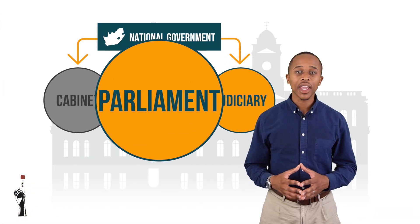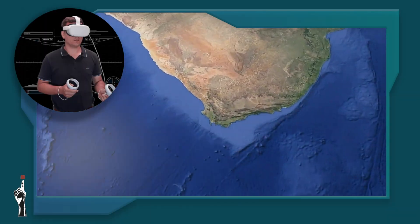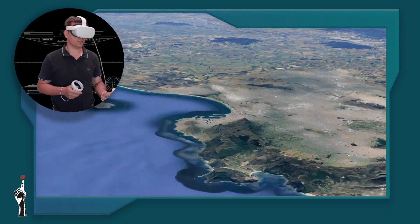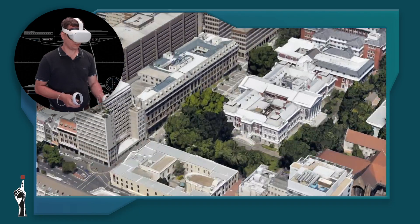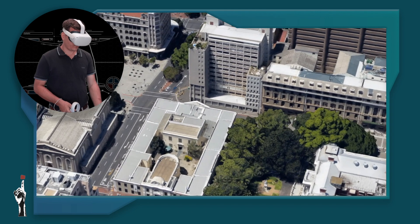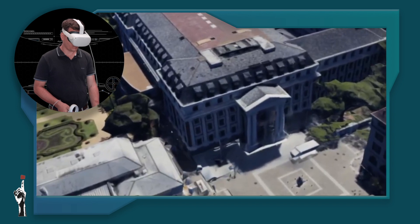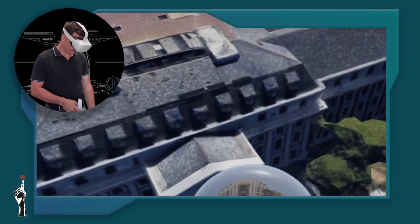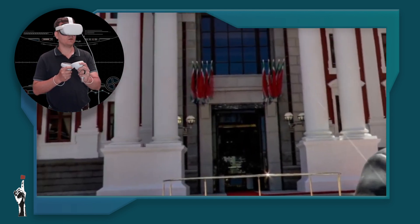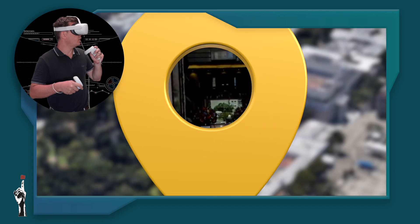Parliament is located in Cape Town, and just like the Union Buildings it is a very beautiful building. Let's have a look at how parliament looks — flying in over Cape Town and viewing the parliament building up close.